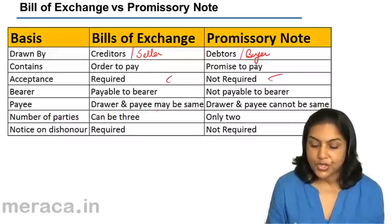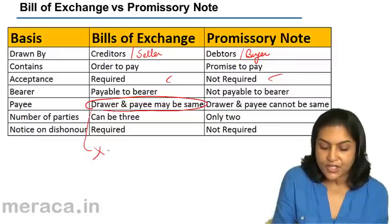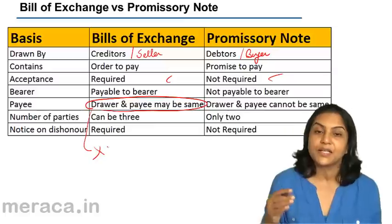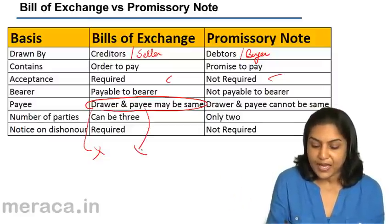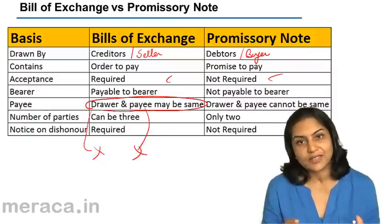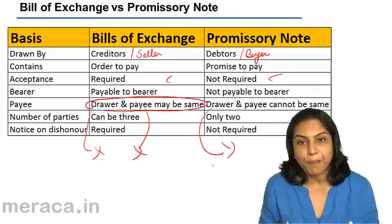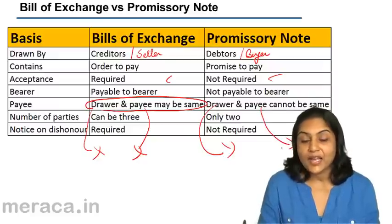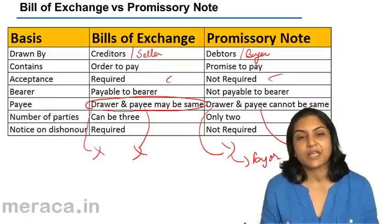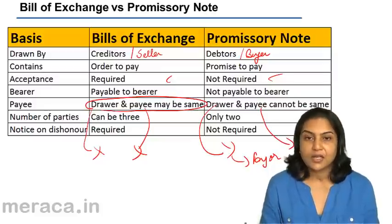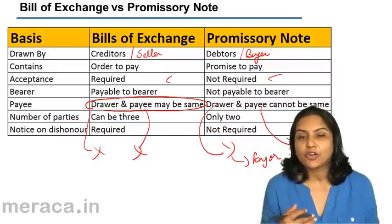In a bill of exchange, the drawer and the payee may be the same. In our example, X made the bill of exchange, and it is possible that he says payment should be made to Mr. X — in which case X is both the drawer and the payee. The payee is the person who receives payment. But in case of a promissory note, the drawer is the person who has to pay, so Y is the payer and not the payee. Therefore, the drawer and payee cannot be the same in a promissory note, because the maker of the promissory note promises to pay — he is the payer and cannot be the payee.